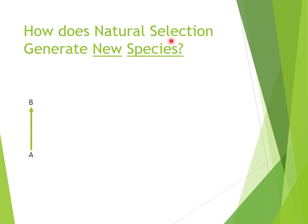How does natural selection generate new species? Not the way we normally see natural selection. Let me explain this picture. Say I had some ancestral species in the past — I'll call it species A. Natural selection works by favoring certain traits over time. Those traits become more common and more developed, and you slowly change species A into species B. That is a new species. But this never creates a higher number of species.